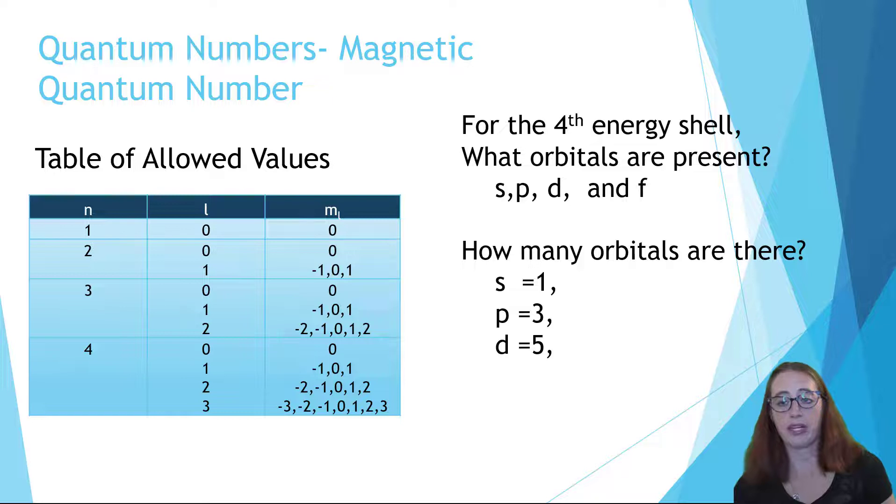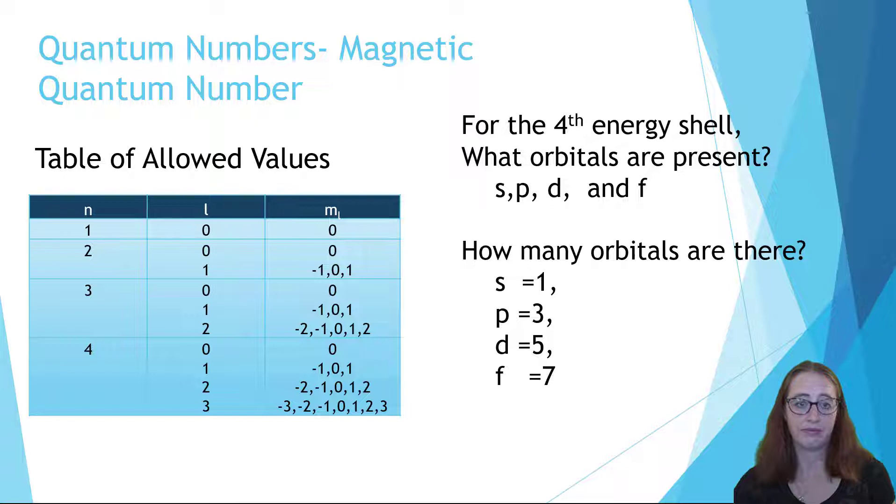And then when l equals three, m sub l is allowed to equal negative three, negative two, negative one, zero, one, two, three. And so there are seven f orbitals. You can count them like tick marks, right? Each value equals a tick mark. Add all of these up and you get 16. So there are 16 total orbitals in the n equals four energy shell.